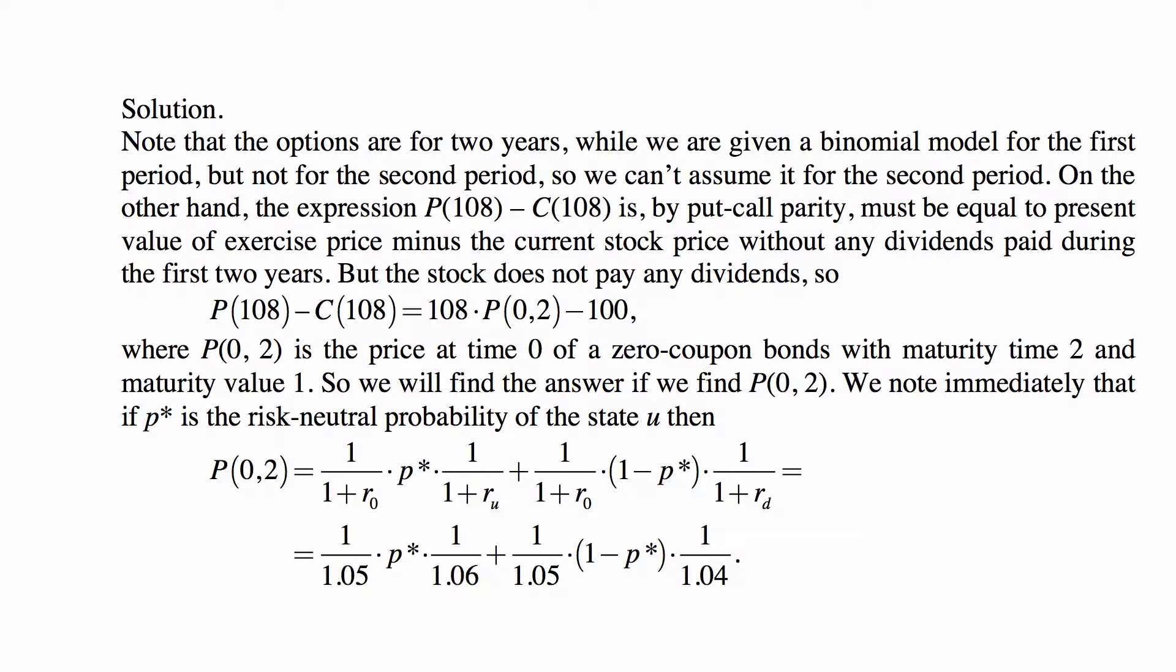and then we can discount these prices using risk-neutral probability to time zero, and that's going to be the price at time zero. So that's precisely what this formula says.